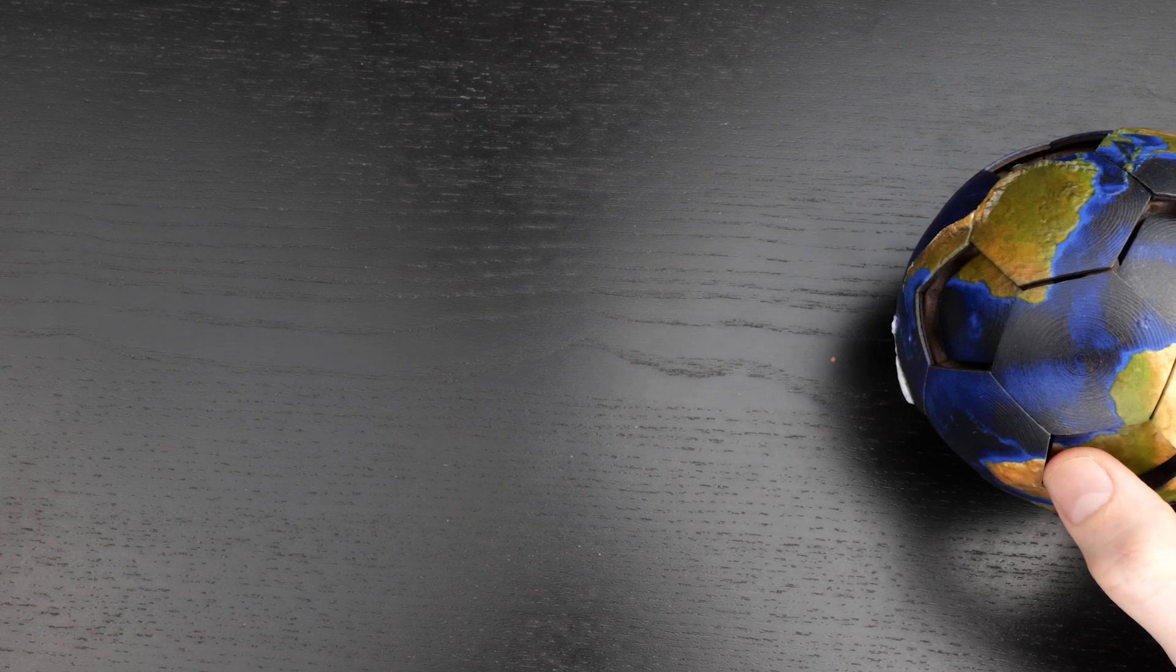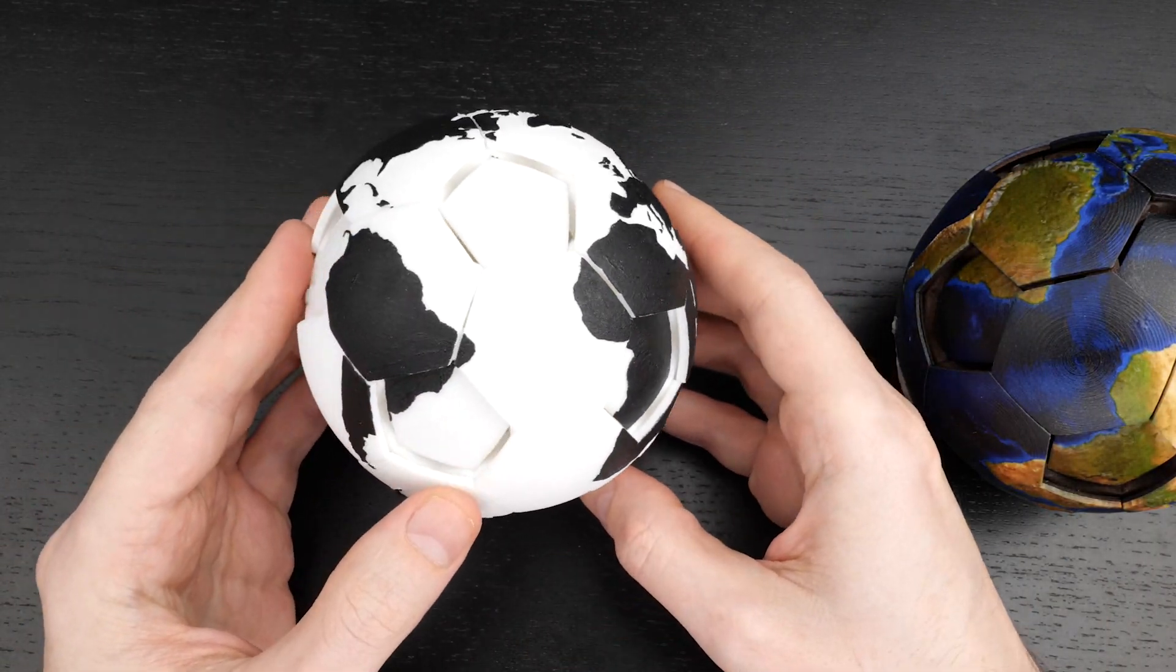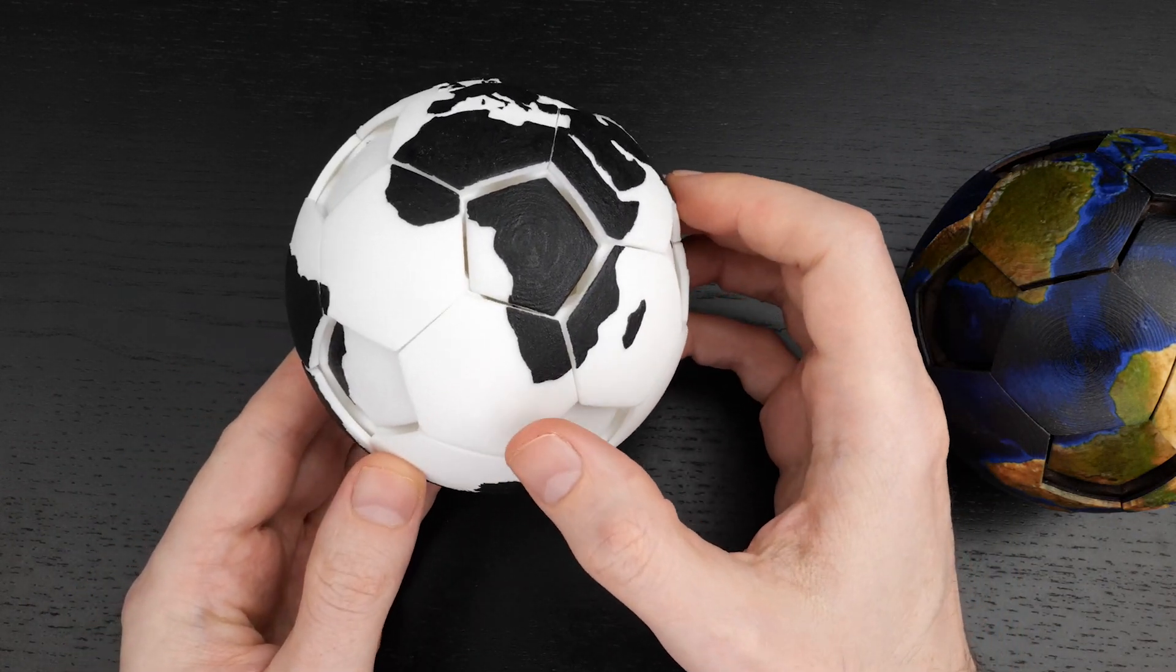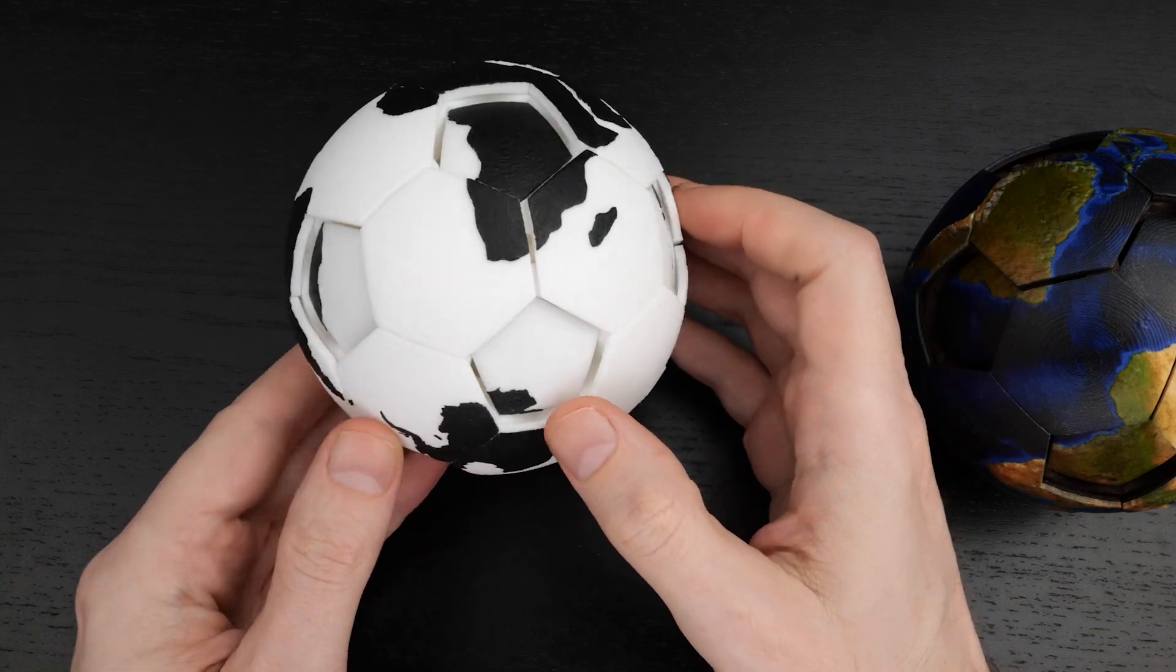For an even harder geography challenge, this plain version doesn't have the color printing. All you have is where the land is. Without context, it's not easy to tell if, say, this tile is part of South Africa or Australia or South America.